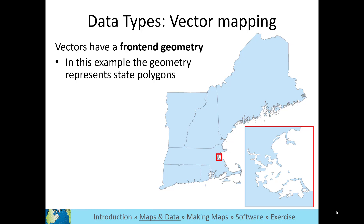Vector data's front-end geometry is composed of coordinates and displayed as points, lines, and polygons. Here is a layer with polygon geometry.